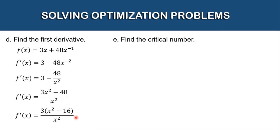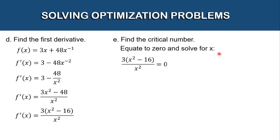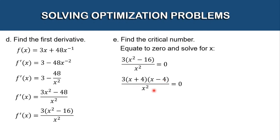To find the critical number, we equate the first derivative to zero: 3(x² - 16)/x² = 0. Since x² - 16 is factorable, we factor it as (x + 4)(x - 4), so we have 3(x + 4)(x - 4)/x² = 0.